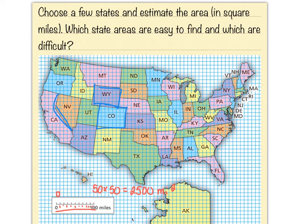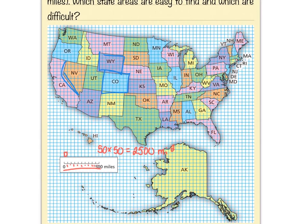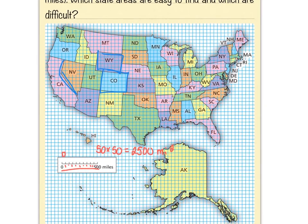Zooming out gives you some perspective on just how big Alaska is. A lot of maps show Alaska off to the side, but it is a huge chunk of land — actually our biggest state by land mass, though one of the least populated states we have.